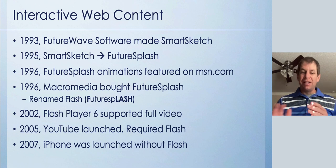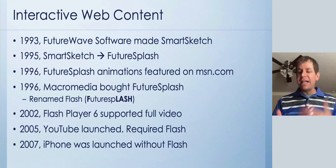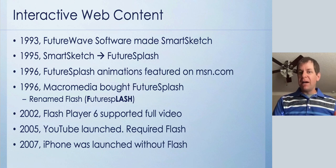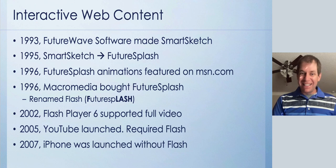In 2002, Flash Player 6 was released, and that supported full video, so you could finally do actual video online — but again, you needed the Flash plugin, and they kept releasing new versions requiring new updates. In 2005, YouTube launched before they were even bought by Google. They were an early player in the online video market, and they required Flash. It seems strange today that you would need to download a plugin just to watch a YouTube video, but that's what we had back in 2005.